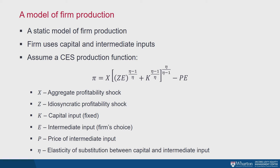Firms are exposed to a profitability shock X — the aggregate, systematic component common to all firms — and Z, the firm-specific idiosyncratic part that is diversifiable in the cross-section. For simplicity, all firms have the same loading on the aggregate shock, so we're not hardwiring heterogeneous risk this way. We call X a profitability shock rather than a productivity shock because we don't want to take a strong stand on what's driving it — both supply and demand channels will commingle. X is a composite capturing both productivity and demand shocks.